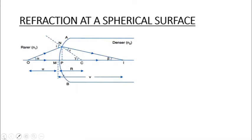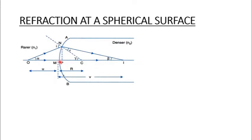The figure shows the geometry of formation of image I of an object O on the principal axis of a spherical surface with center of curvature C and its radius of curvature R. The rays are incident from a medium of refractive index n1 to another of refractive index n2. We take the aperture, or the lateral size of the refracting surface, as very small compared to the other distances like u, v, and R, so that we can apply the small angle approximation.